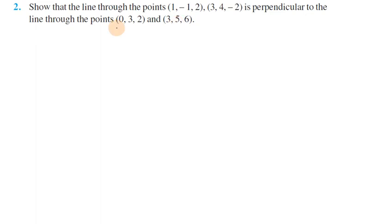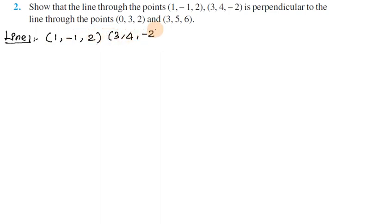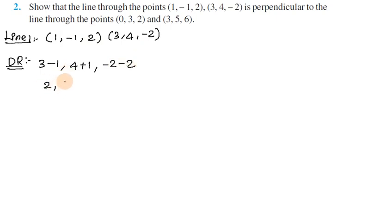To prove this, first find Line 1 direction ratio. Line 1 goes from point (1, -1, 2) to point (3, 4, 2). Direction ratio is x2 minus x1, y2 minus y1, z2 minus z1: 3 minus 1, 4 minus (-1), 2 minus 2. So the direction ratio of Line 1 is 2, 5, minus 4.